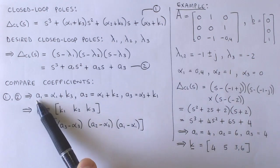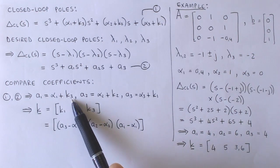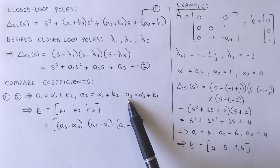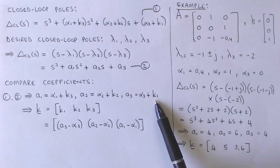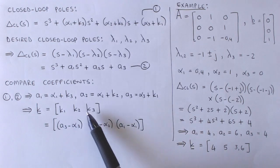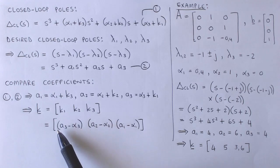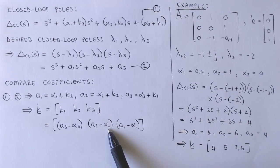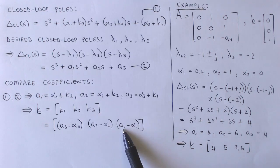We call this equation 2. We now equate the coefficients between equations 1 and 2, resulting in A1 equal to alpha 1 plus K3, A2 equal to alpha 2 plus K2, and A3 equal to alpha 3 plus K1. After rearranging these equations, we can easily solve for the elements of vector K, where K1 is equal to A3 minus alpha 3, K2 is equal to A2 minus alpha 2, and K3 is equal to A1 minus alpha 1.